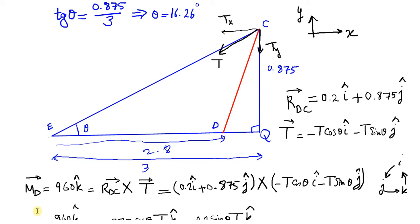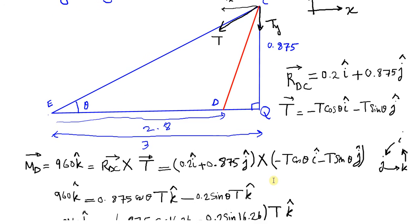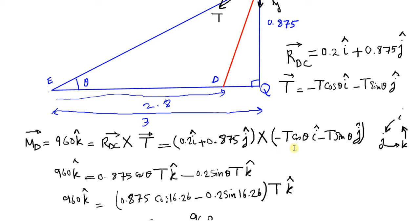The 960 Newton-meters is in the K direction, perpendicular to the XY plane. So RDC = 0.2i + 0.875j, cross product with T. Expanding: the cross product of i times i is 0, and j times j is 0, so we only have i times j and j times i terms. We get 0.2i times minus T sine(theta) j, and i times j makes K, giving us minus 0.2 sine(theta) K.